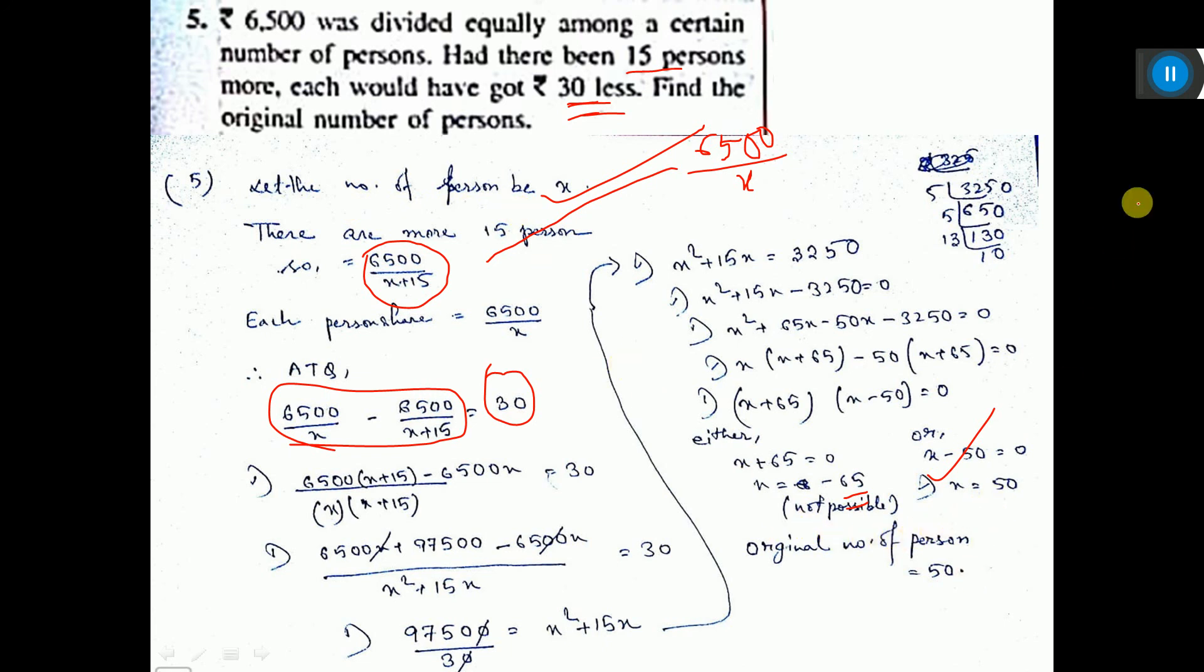So the number of persons equals 50. Answer. That's all.